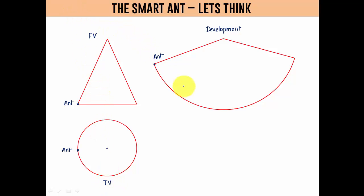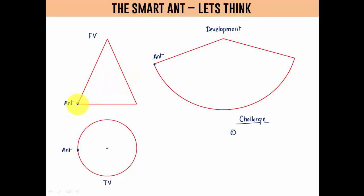Now what is the challenge in front of the ant? Since it is a smart ant, something good is expected. The challenge is: the ant has to start from this point, travel around the cone along the lateral surface, and return back to its original position by taking the shortest path. In order to work this out, the ant has to use the development technique.